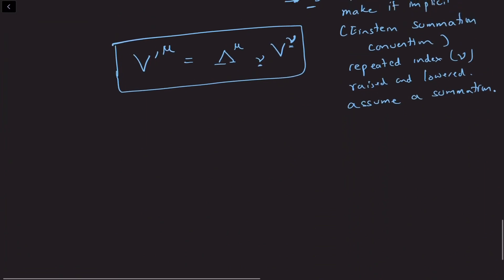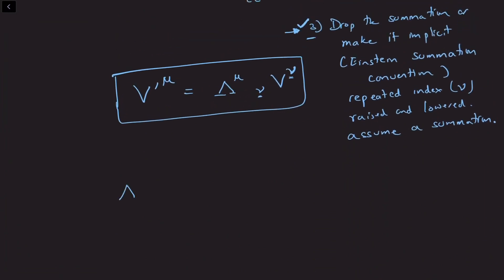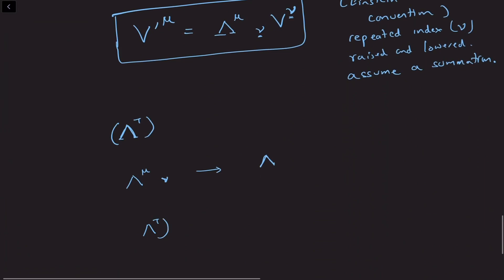The conflict will actually arise when we write down something like lambda transpose. When we write down lambda transpose, lambda has indices mu and nu, but when we write down lambda transpose, what we need to do is reverse the indices. That is, if I take the (i,j)th entry — without using upper and lowered indices — the (i,j)th entry of lambda transpose is going to correspond to lambda j i, the (j,i)th entry of lambda.